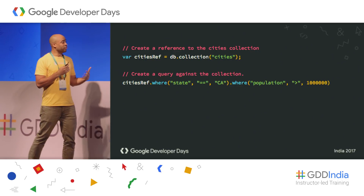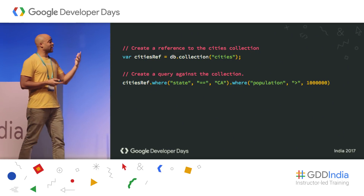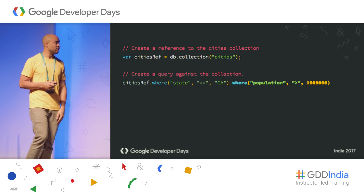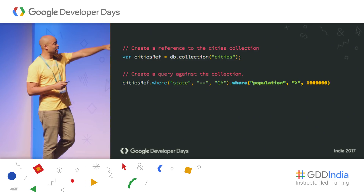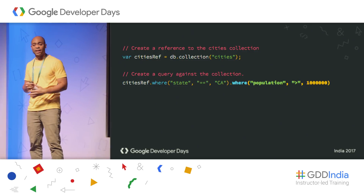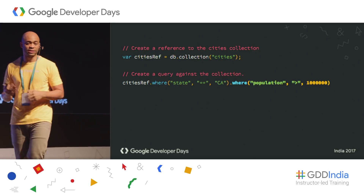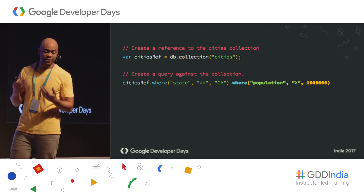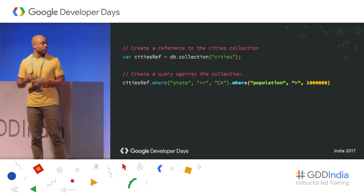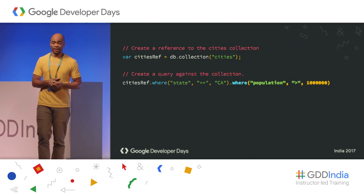We can go even further with compound queries. We also grab the cities reference, and then add a compound where clause — here we're looking for cities in California with a population of more than a million.